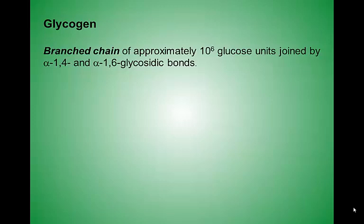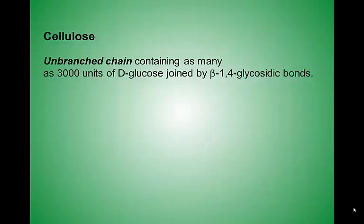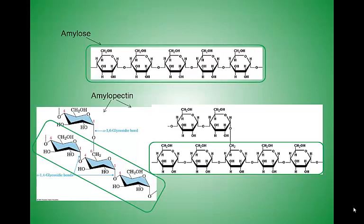Next we'll look at glycogen, which looks similar to amylopectin. And finally, cellulose — unlike the other two polysaccharides — is held together by beta glycosidic bonds. I've also included the structure for amylose below the structure of cellulose to compare the beta to alpha glycosidic bond. Here are some additional images that you could study from to identify the glycosidic bonds in these large polysaccharides.